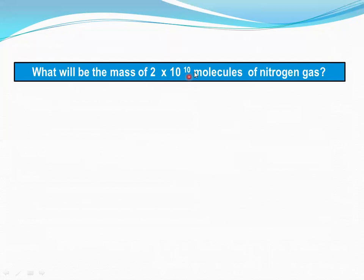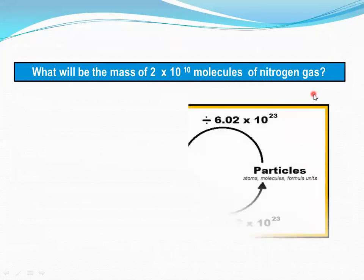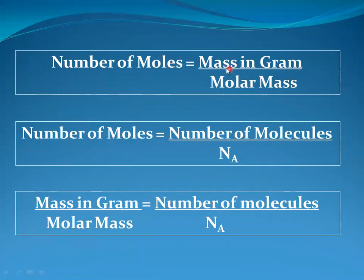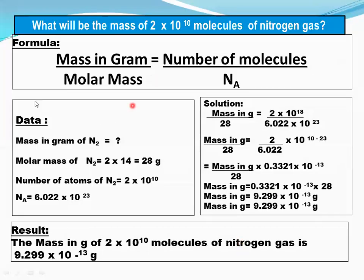Next example: what will be the mass of 2 × 10¹⁰ molecules of nitrogen gas? We have the number of particles — molecules. First convert into moles by dividing by the Avogadro constant, then multiply by the molar mass to get the mass in grams of nitrogen gas. Arrange the data: molar mass of N₂ = 2 × 14 = 28 g/mol; number of molecules of N₂ given in the question = 2 × 10¹⁰.